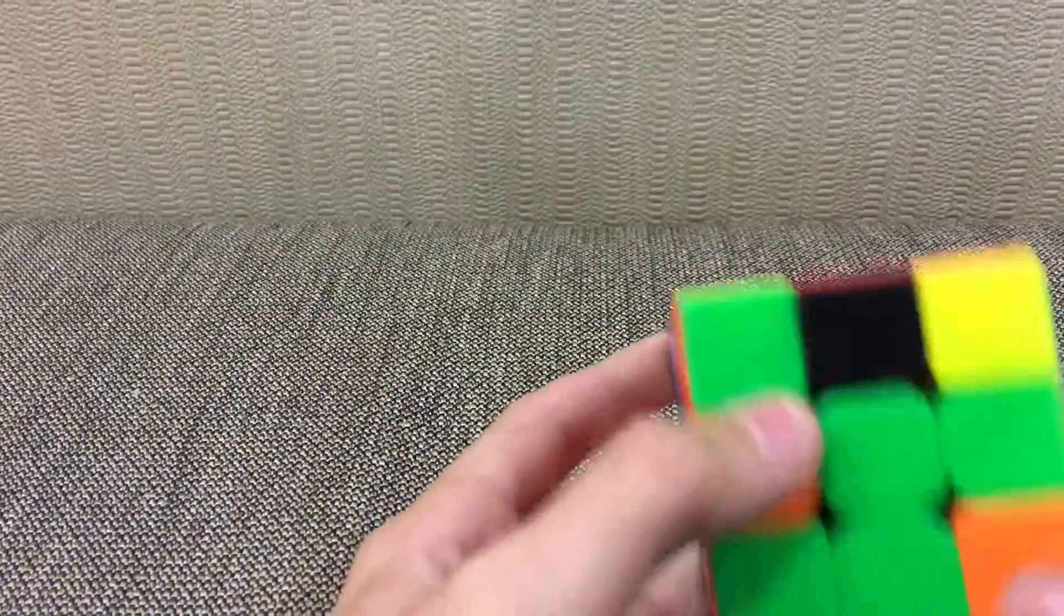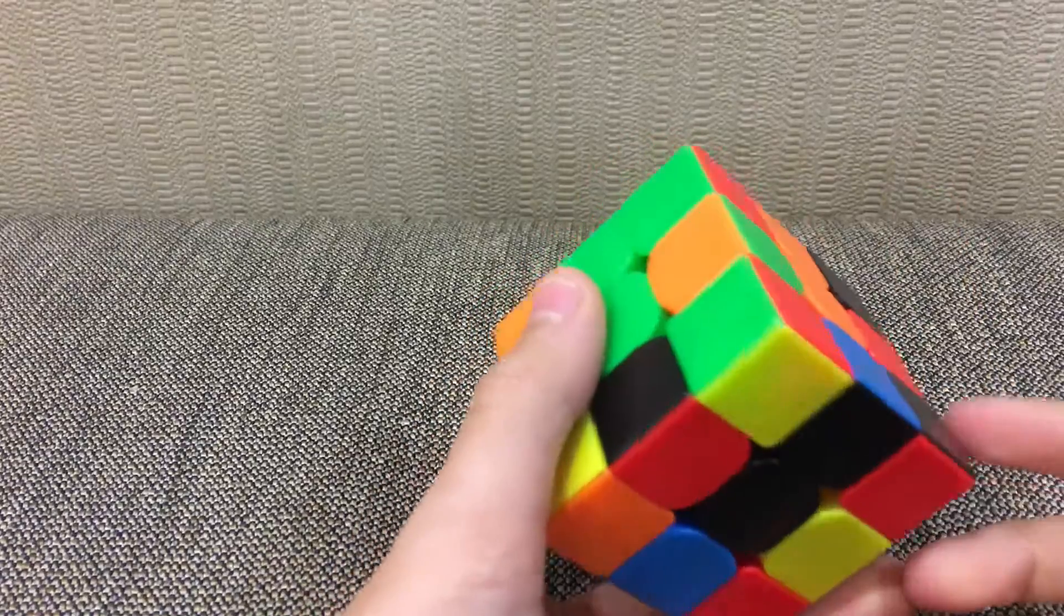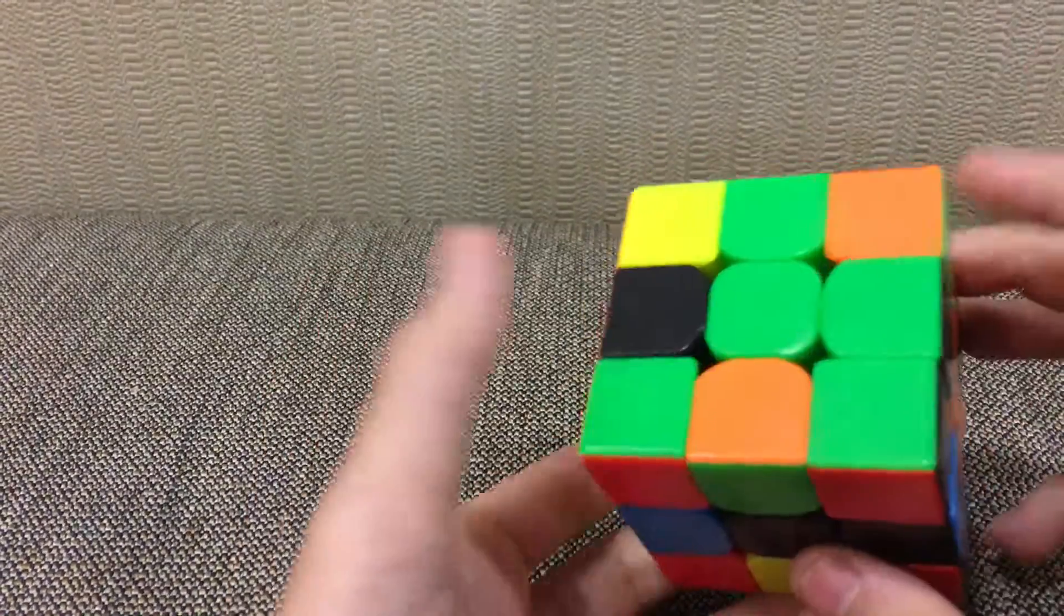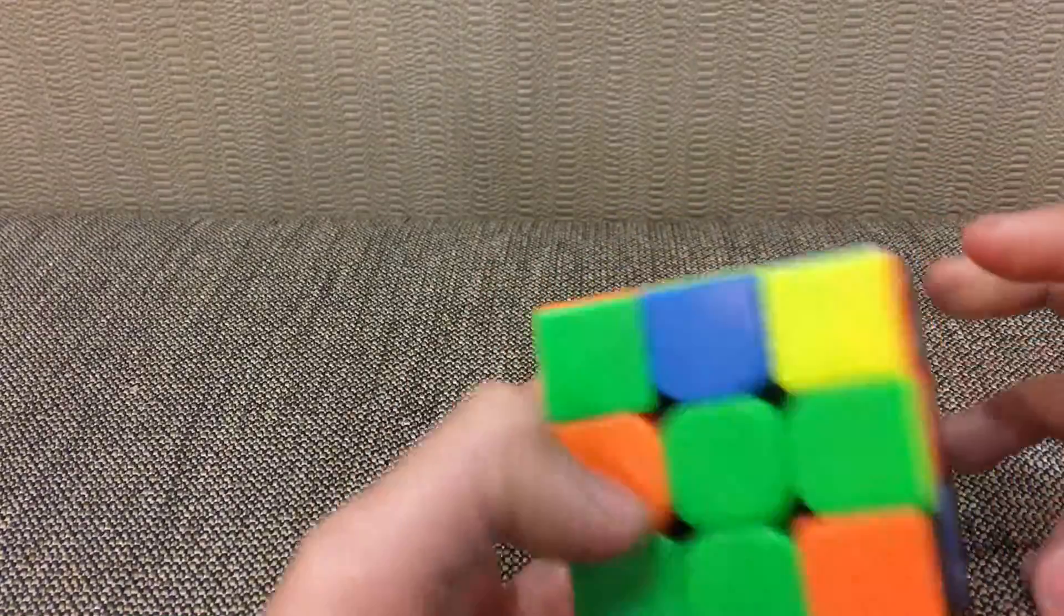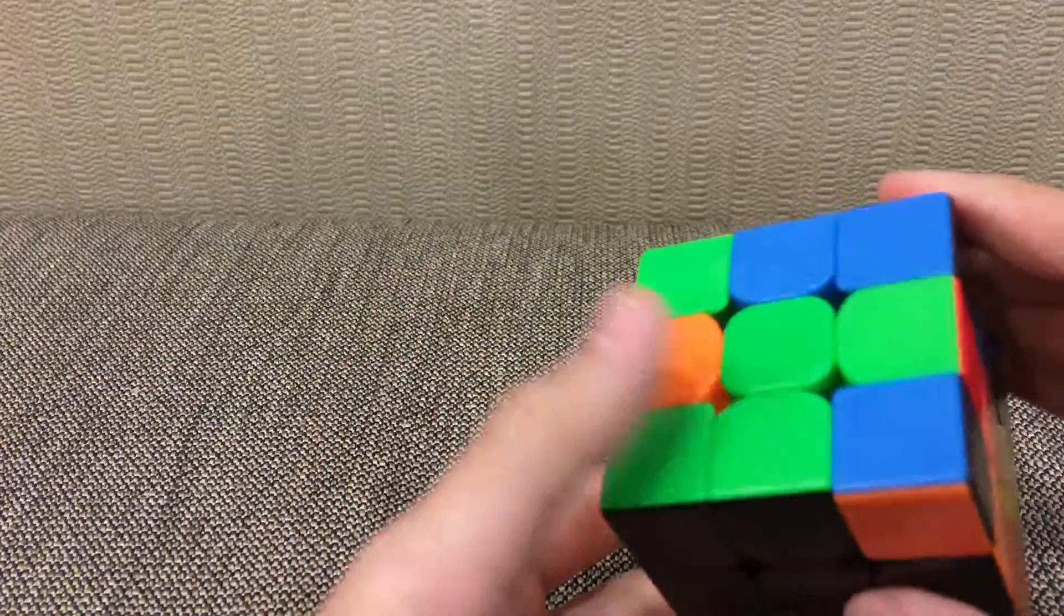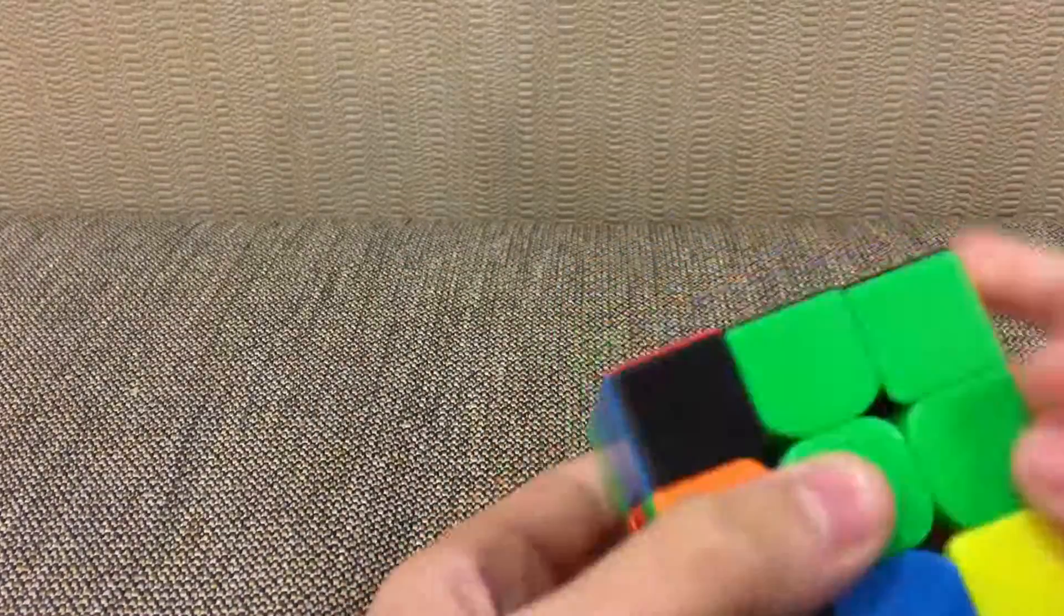So what I did, I did a Z2. And I saw this piece, so F L F. And I saw that here, so R2. Then I paired that up to make a 2x2x2 block. F2 U' F2 U F2.